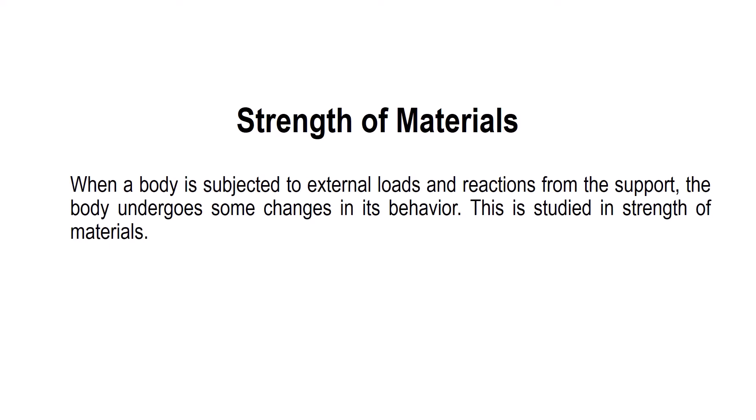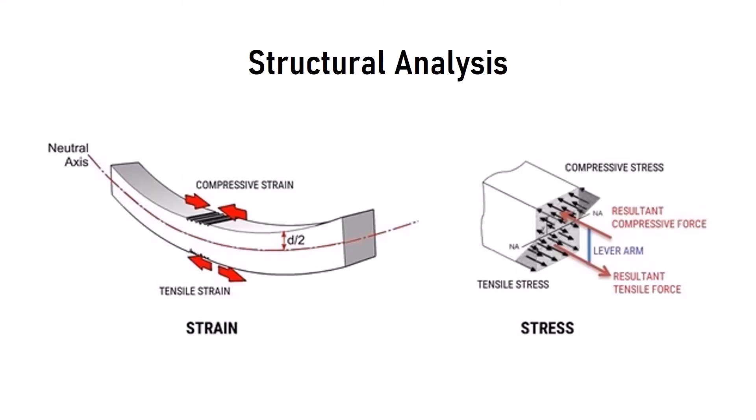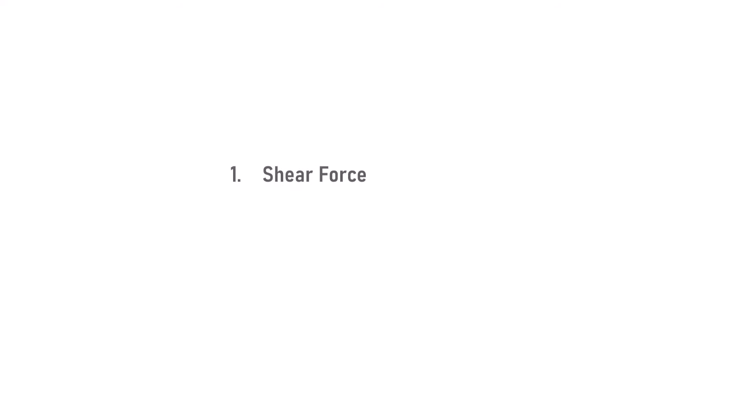Once you study Engineering Mechanics, the next subject introduced is Strength of Materials. When a body is subjected to external loads or support reactions, the body undergoes some sort of changes in its behavior — in terms of deformation or deflection. This study of material behavior under external conditions is covered in Strength of Materials, another important topic in civil engineering. After gaining basic knowledge of Engineering Mechanics and Strength of Materials, you move into Structural Analysis Part 1 and then Part 2.